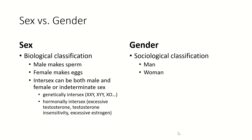Gender is entirely a sociological construct. We have definitions of what we think makes a man and what makes a woman, and not everybody adheres to those societal norms. There are many men who are fairly effeminate or feminine in their behaviors and appearance, and there are women who are very masculine in their behaviors or appearance. That doesn't make them not men or not women — that's just the way a person sees themselves and the way they want to dress or appear.